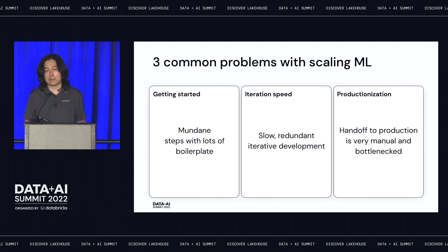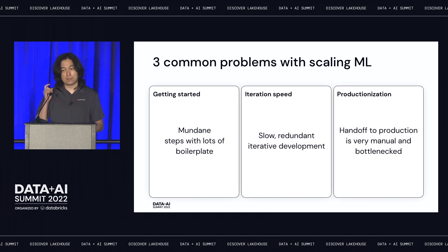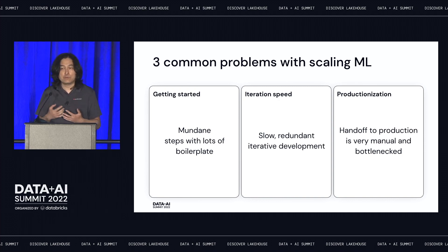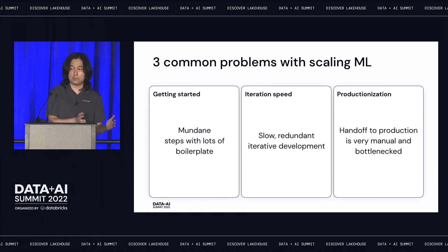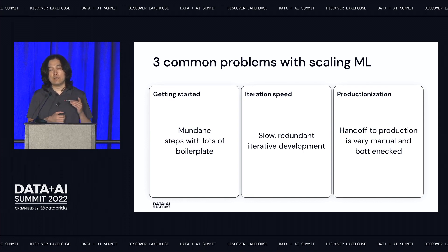We saw two versions among our customers. Version one: data scientists spend days learning how to use an IDE, how to do the refactoring, and meet the production requirements. After they meet the requirements, they get the models into production. But after productionization, models may not always track the most recent trends — data changes and you have to refresh your model. Since they're still familiar with notebooks, they come back to notebooks for another iteration, then have to refactor again to ship to production. The complaint: even a single line change for a model already in production is super hard for them.